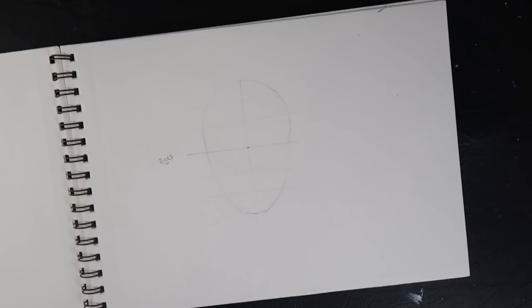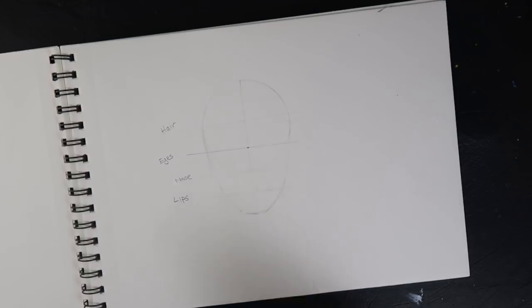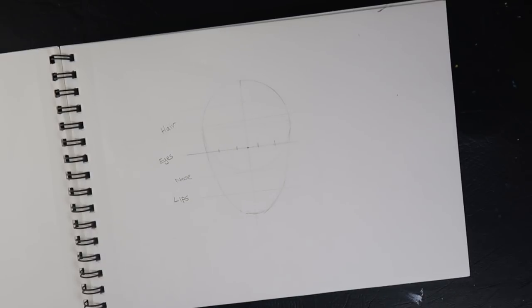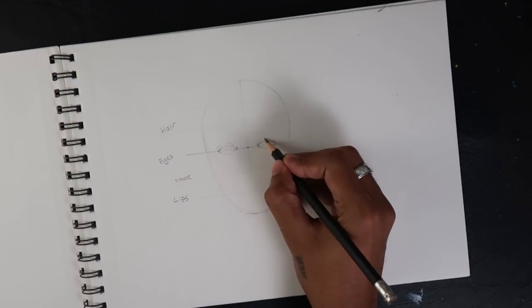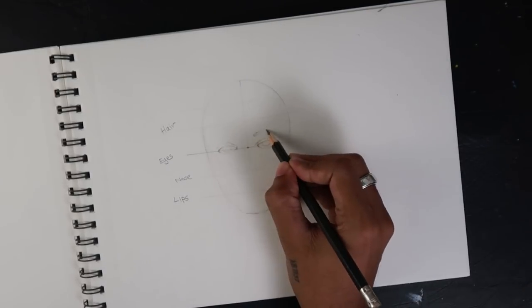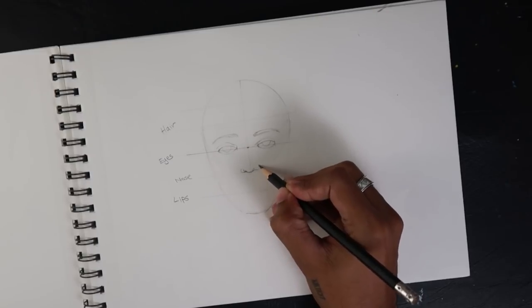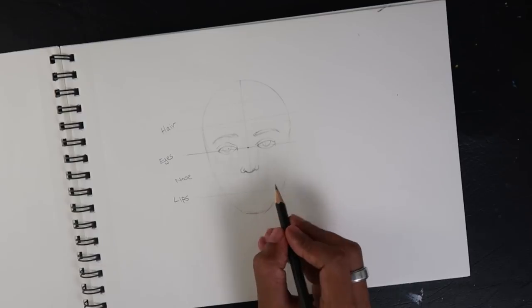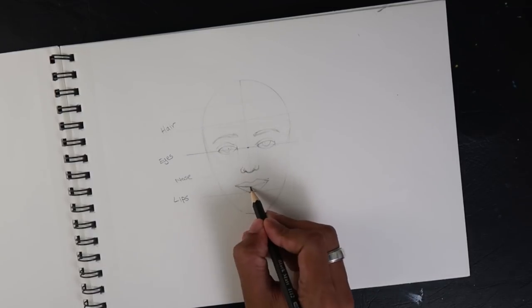The upper portion will have the hair line. These are the guidelines that will help us. At the center, we mark the line. The nose is here, and below that the lips. The upper portion has the hair line. The face is divided equally into 5 parts using 4 points.